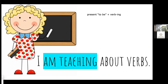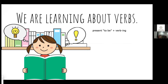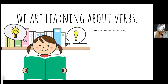We have our form of the verb 'to be' and our verb with the '-ing' ending. Let's look at another one: 'We are learning about verbs.' Who can see the present progressive verb in this sentence? Remember, we need two parts: a form of the verb 'to be' — that's 'am,' 'is,' or 'are' — plus a verb ending in '-ing.'